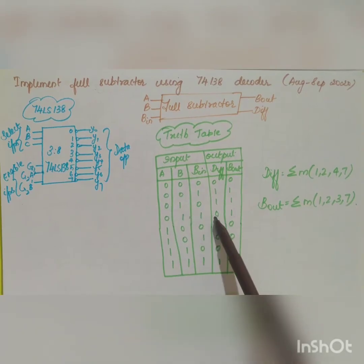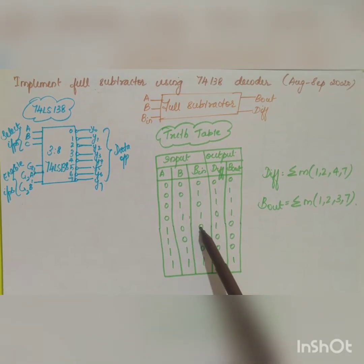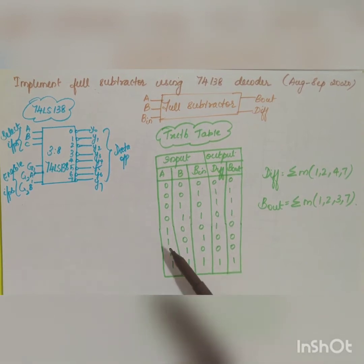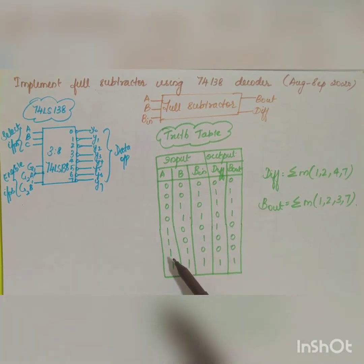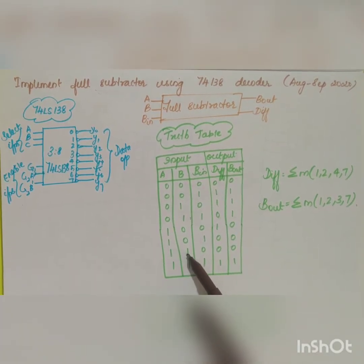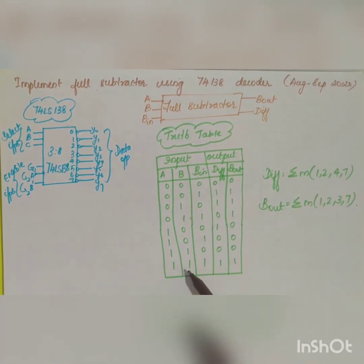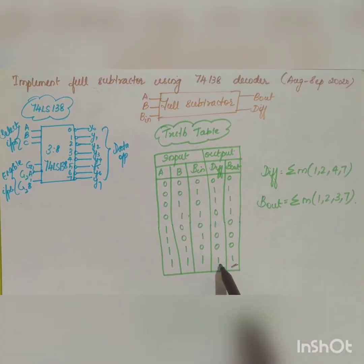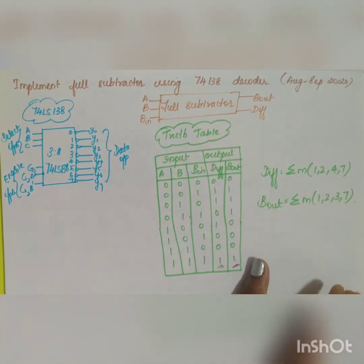For 1 minus 1, Difference = 0 with no borrow. For 1 minus 0, Difference = 1 with no borrow. For 1 minus 1, Difference = 0 and Borrow-out = 0. In the last case, 0 minus 1 requires a borrow, so Borrow-out = 1 and Difference = 1. These are all the Difference and Borrow-out values of the full subtractor.